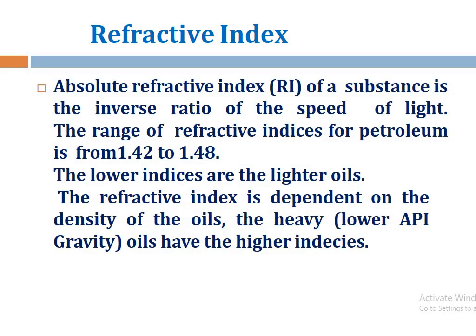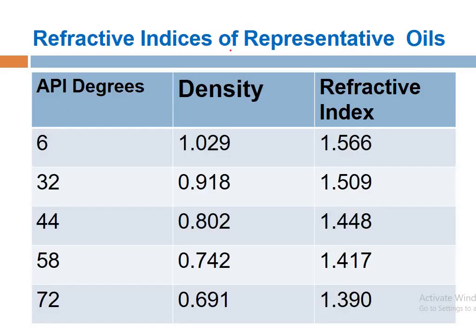Third, refractive index: the absolute refractive index (RI) of a substance is the inverse ratio of the speed of light. The range of refractive indexes for petroleum is from 1.4 to 1.48. The lower indices correspond to lighter oils; the refractive index is dependent on the density of the oil — heavier, lower-API-gravity oils have higher refractive indices. Higher density means a higher refractive index.